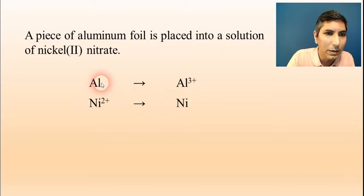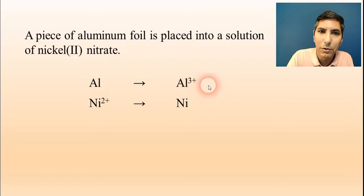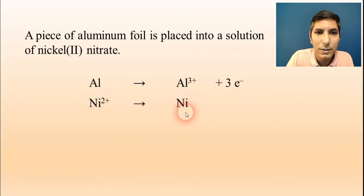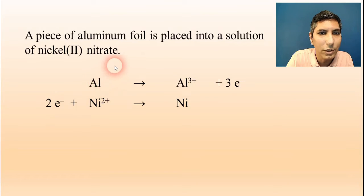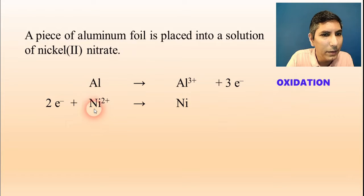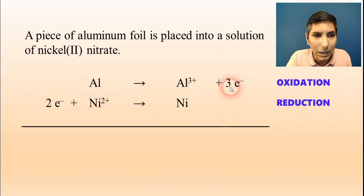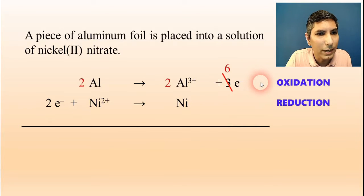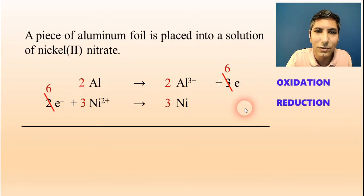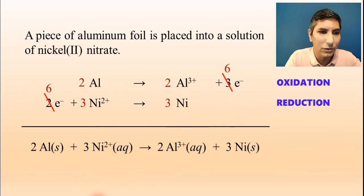Now we balance the charges. The first half reaction has 0 vs +3, so we add three electrons. The second has +2 vs 0, so we add two electrons. The aluminum's charge is going up — that's oxidation. The nickel's charge is going down — that's reduction. We have three vs two electrons, so we multiply equation one by two and equation two by three, giving us six electrons on both sides that cancel out.